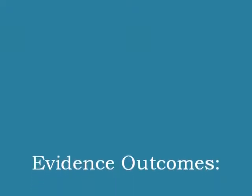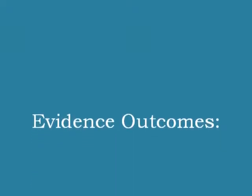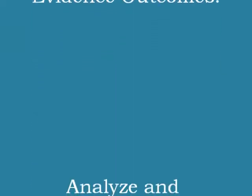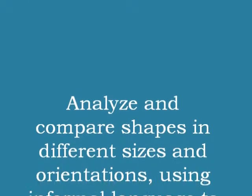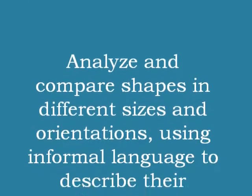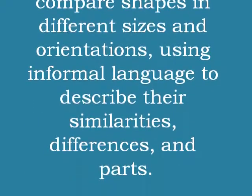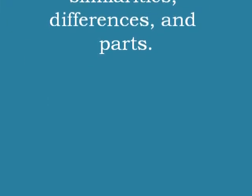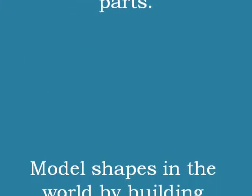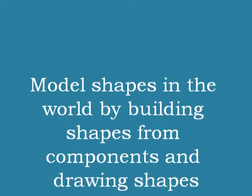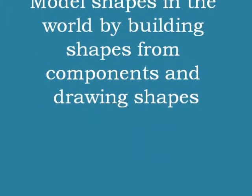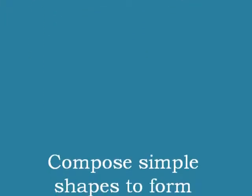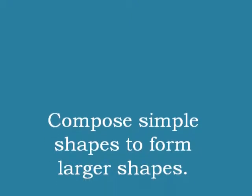The evidence outcomes for this standard are as follows. Analyze and compare shapes in different sizes and orientations using informal language to describe their similarities, differences, and parts. Model shapes in the world by building shapes from components and drawing shapes. And, compose simple shapes to form larger shapes.